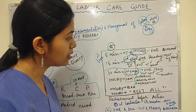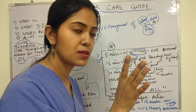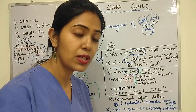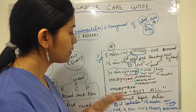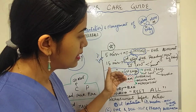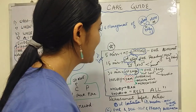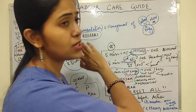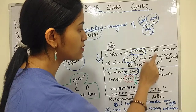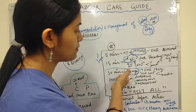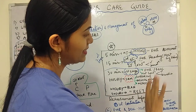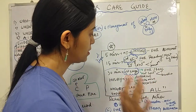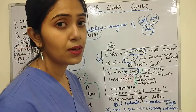In the first stage of active labor — that is, five centimeters or more dilated — the fetal heart rate and uterine contraction duration and frequency are the most important parameters. In the first stage, both the fetal heart rate and uterine contractions must be assessed and plotted every 30 minutes on the Labor Care Guide.